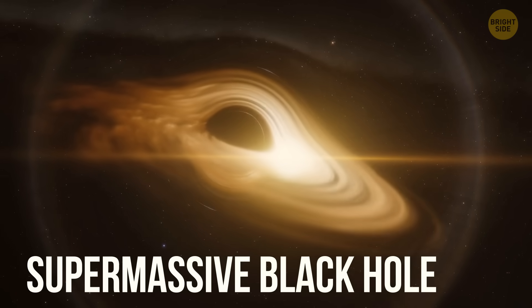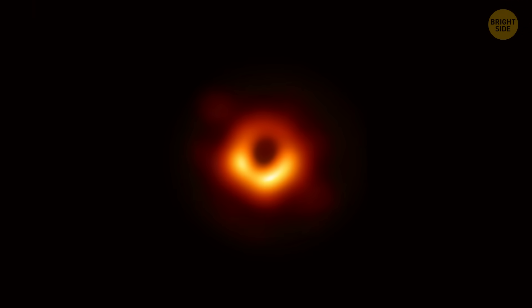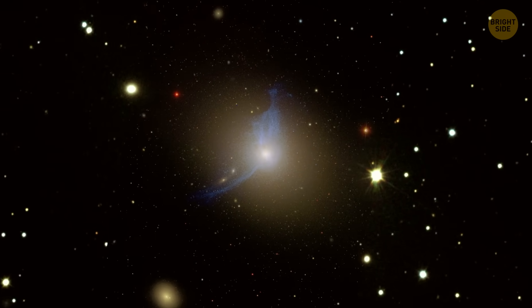As for supermassive black holes, they're thought to have formed alongside the galaxies they're in. The size of the black hole is usually related to the size and mass of the galaxy.